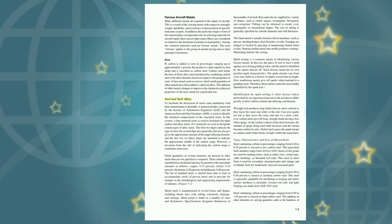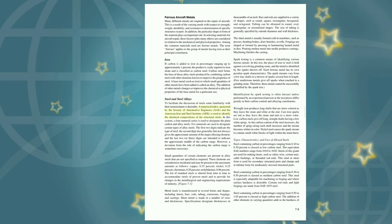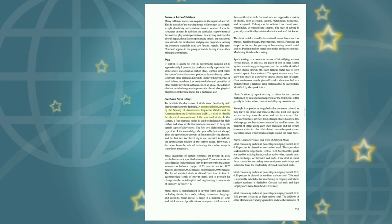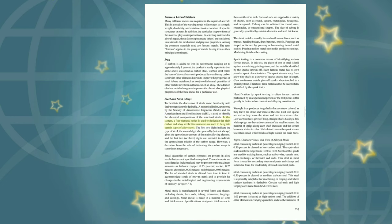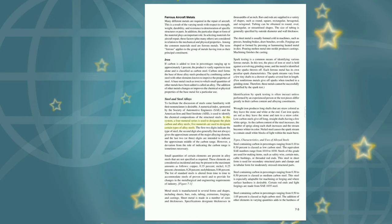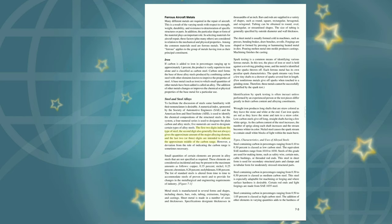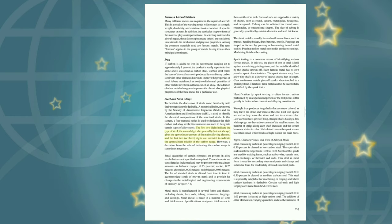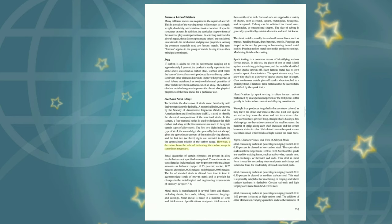Steel and steel alloys: A numerical index sponsored by the Society of Automotive Engineers (SAE) and the American Iron and Steel Institute (AISI) is used to identify the chemical compositions of structural steels. In this system, a four-numeral series is used to designate the plain carbon and alloy steels, and five numerals are used to designate certain types of alloy steels. The first two digits indicate the type of steel; the second digit also generally gives the approximate amount of the major alloying element, and the last two or three digits indicate the approximate middle of the carbon range.